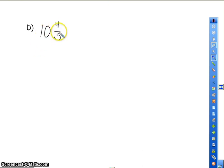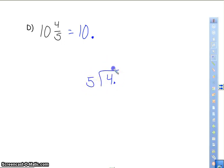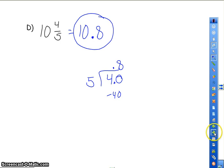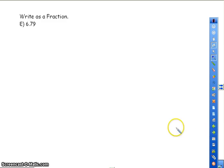And my last one, 10 and 4 fifths. So I know it's going to be 10 and something. 4 divided by 5. My decimal point. 5 goes into 40 eight times evenly. So it's going to be 10.8, or 10 and 8 tenths as my answer. So that's converting your fractions or mixed numbers to decimals.